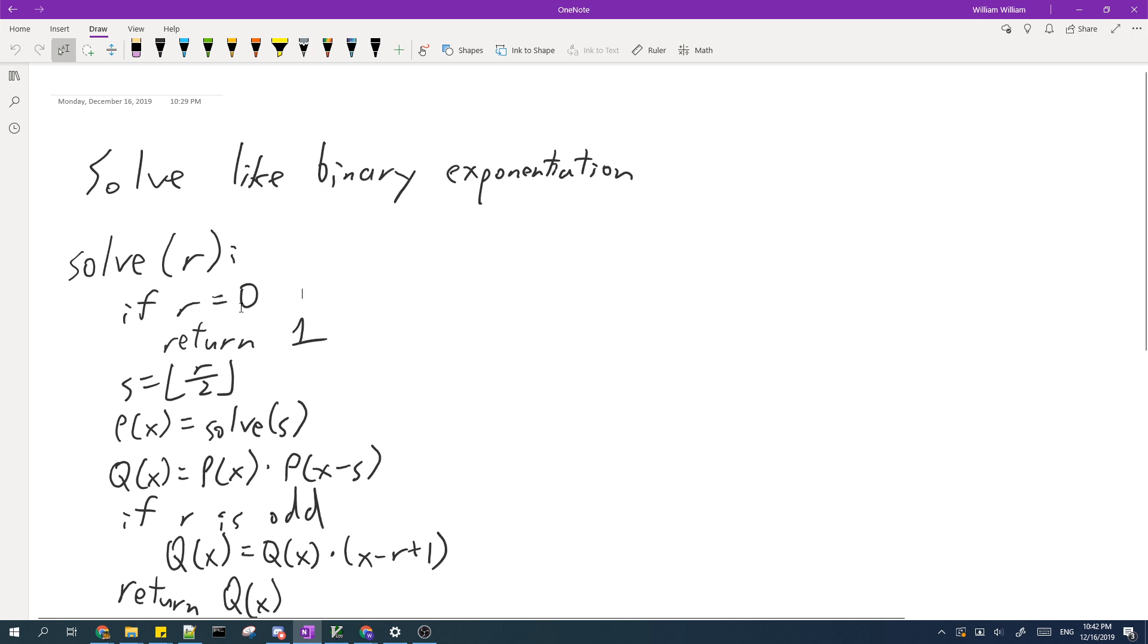So if r is equal to zero, then we just return, this is a trivial case, and we just return one. Otherwise, we need to divide our product into two parts. And each part is of size s, where s is the floor of r divided by two. Now we solve it for s.